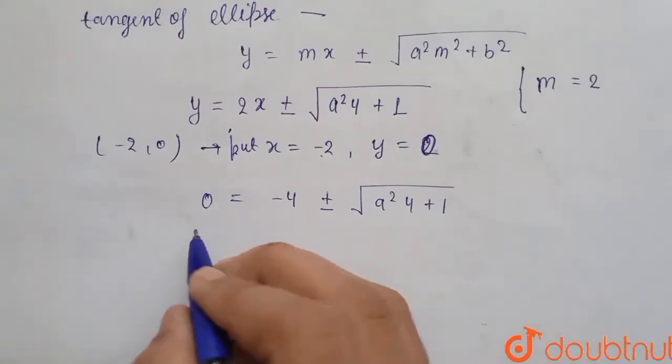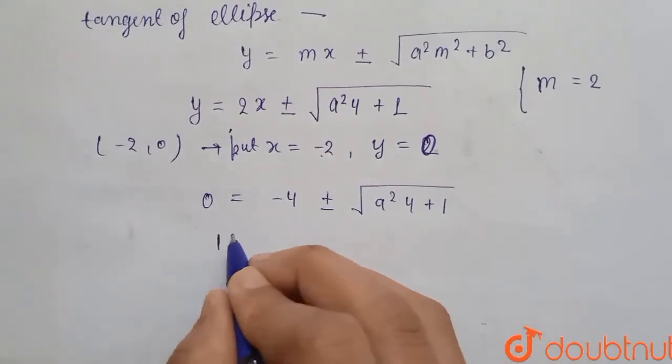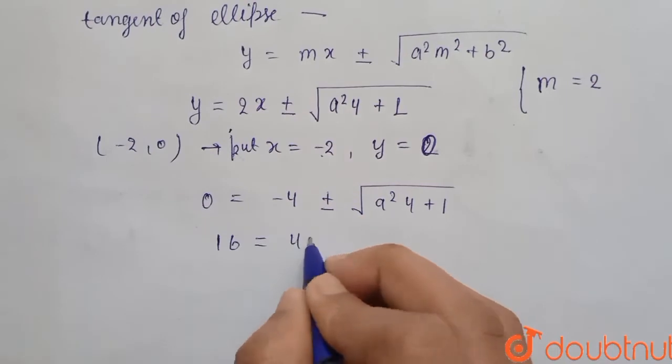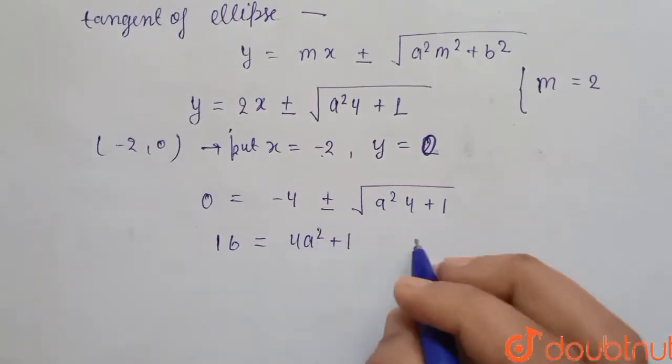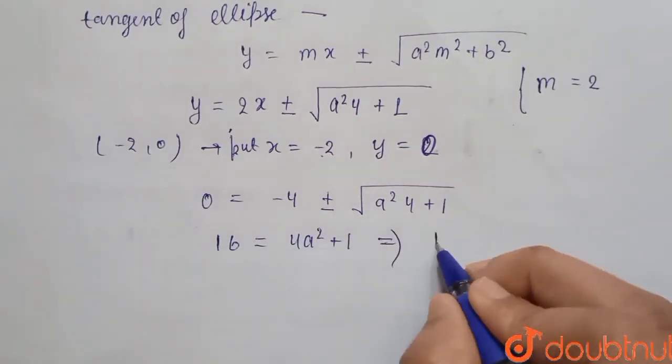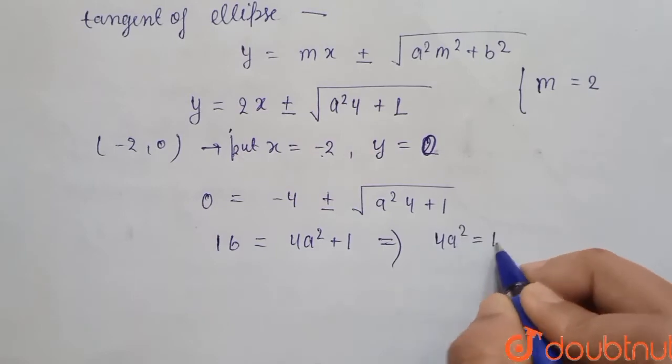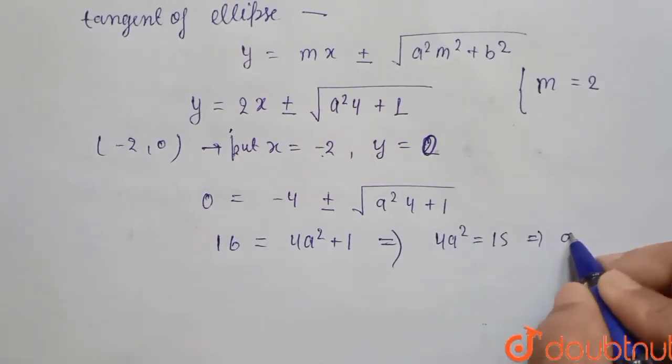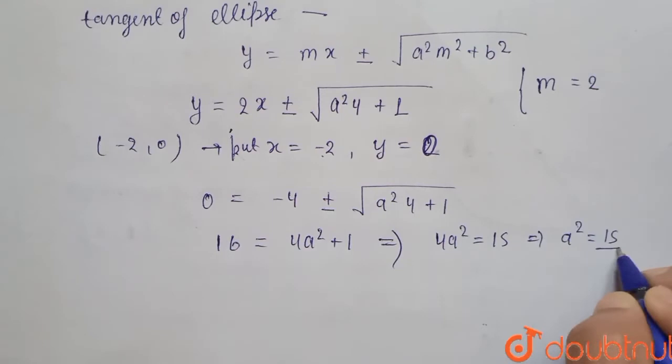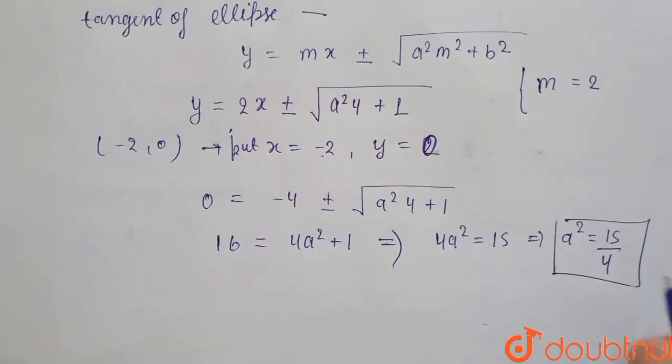Now move this to left hand side and square both sides. So we get 16 = 4a² + 1. From this we get 4a² = 15 or we get a² = 15/4.